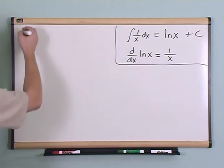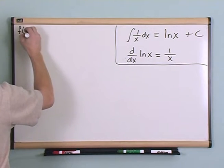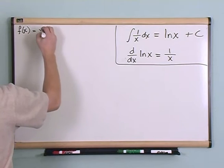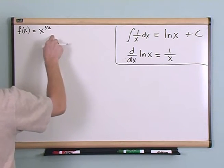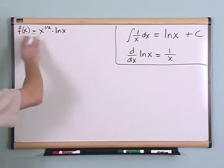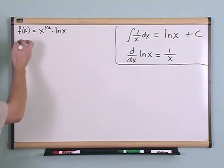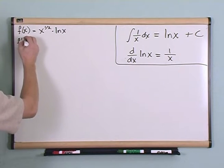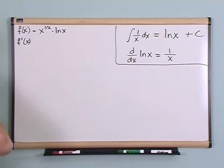So let's go ahead and work some problems. What if you were given f of x is equal to x to the one-half power, in other words the square root of x, times the natural logarithm of x. And this is your function. And they say, well, give me the derivative, f prime of x. And you're going to have to find that derivative.